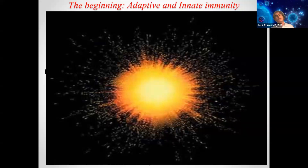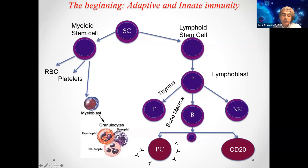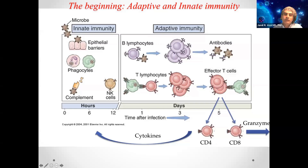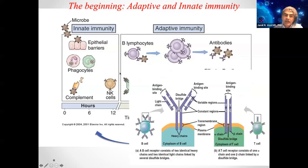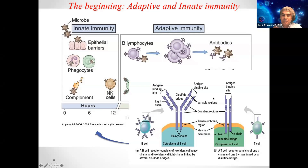Where do we start? We start with the idea that the immune system divides into two big arms: the adaptive immunity and the innate immunity. The adaptive immunity encompasses the T and B cells. Those are cells that have receptors on their surface, and those receptors allow them to recognize specific antigens and only react to those antigens. So the adaptive immunity is very specifically geared toward specific antigens.